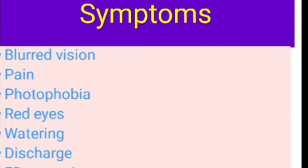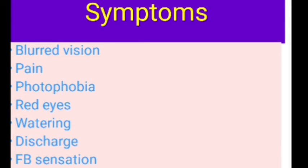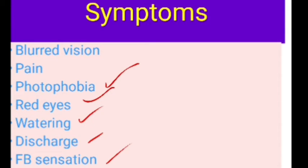Regarding symptoms, the patient usually presents with blurred vision — the degree depends on the extent and location of the corneal ulcer. There is pain, intractable photophobia, red eyes with watering, discharge, and foreign body sensation. These symptoms are present in both bacterial and fungal corneal ulcer. However, in fungal corneal ulcer, the symptoms are not proportionate to the signs — the signs are more severe compared to the symptoms, which is a key differentiating point.